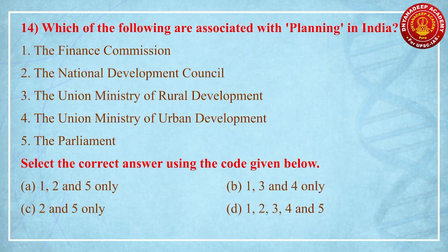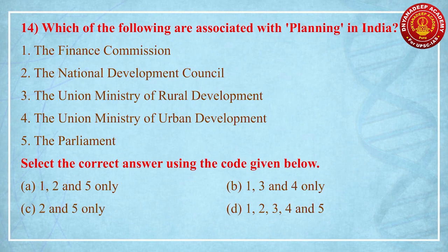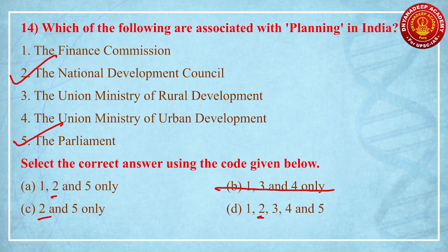Question number 4: which of the following are associated with planning in India? The most correct answer that everyone should know includes Parliament — so option with Parliament is correct and B option is eliminated. National Development Council is also associated. It is an old question. Finance Commission and other bodies are part of planning in India, but only two institutions — Parliament and National Development Council — are directly related with planning in India. So the correct answer is 2 and 5 as per UPSC.